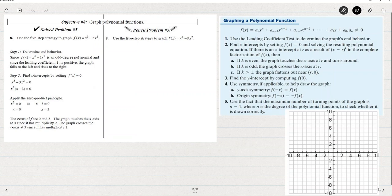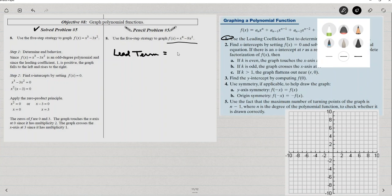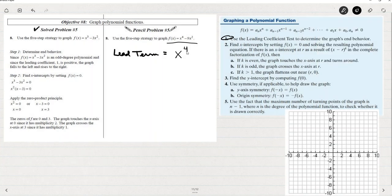Let's draw everything together from this section and use the five-step strategy to graph this polynomial f of x equals x to the fourth minus nine x squared. To start with, number one, we'll use the lead coefficient test to determine the end behavior. So the lead term, the lead term is one x to the fourth.